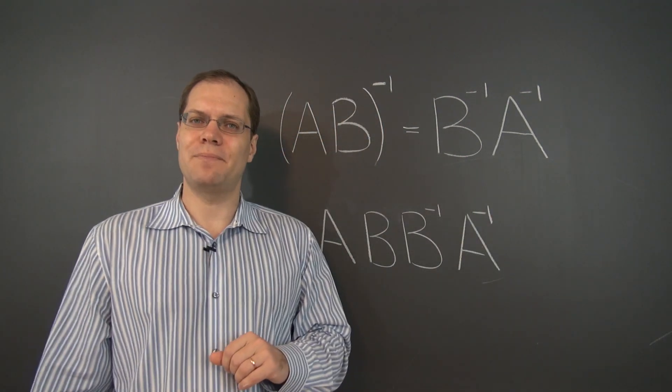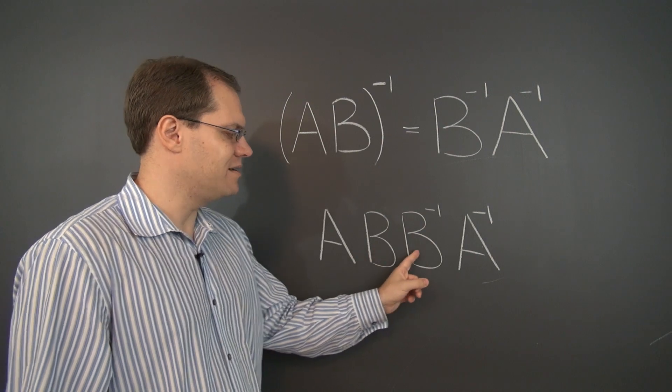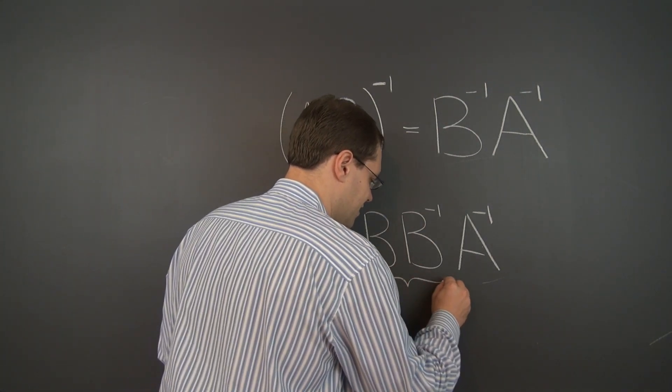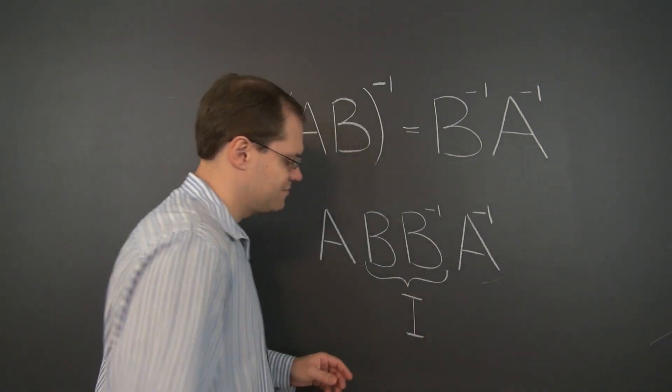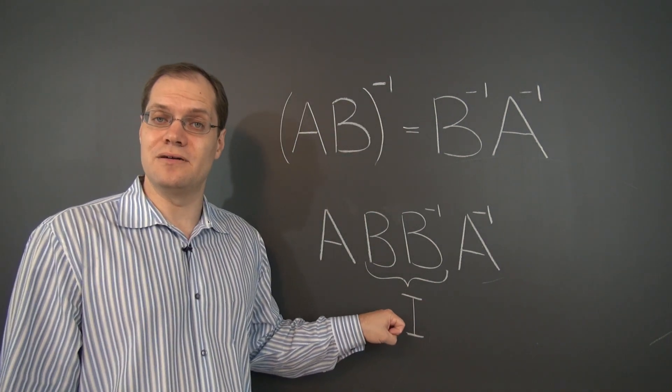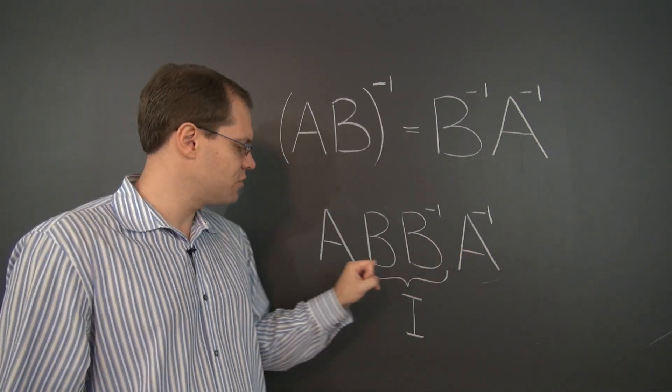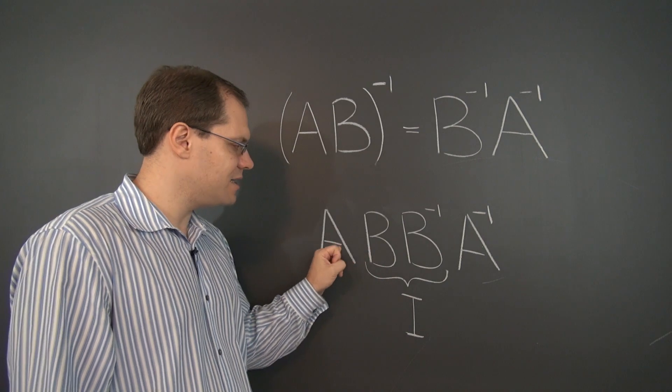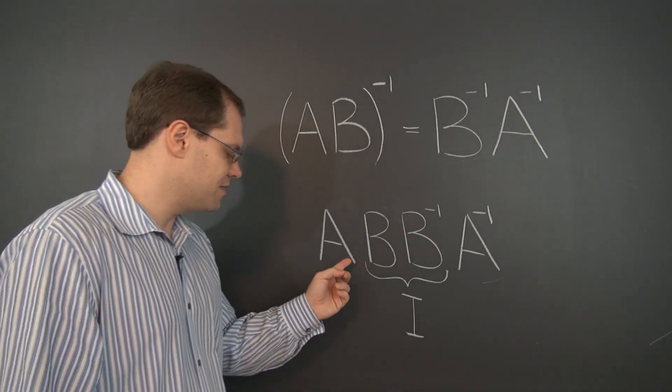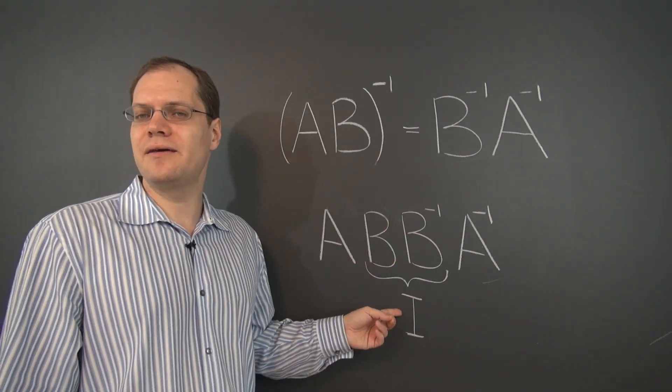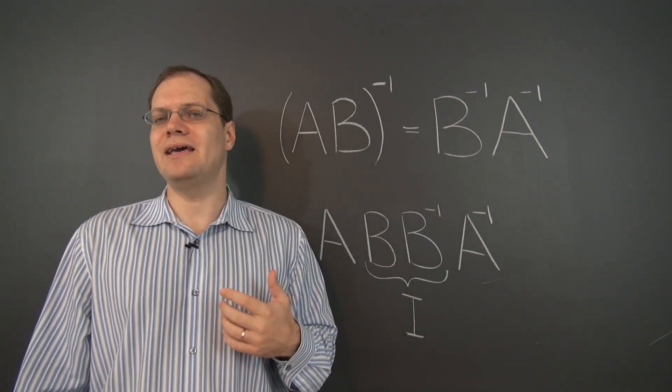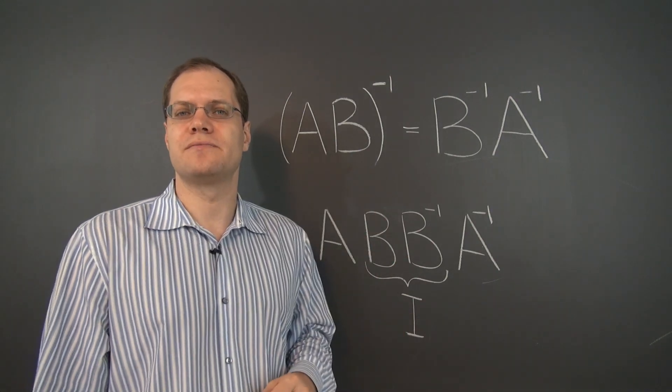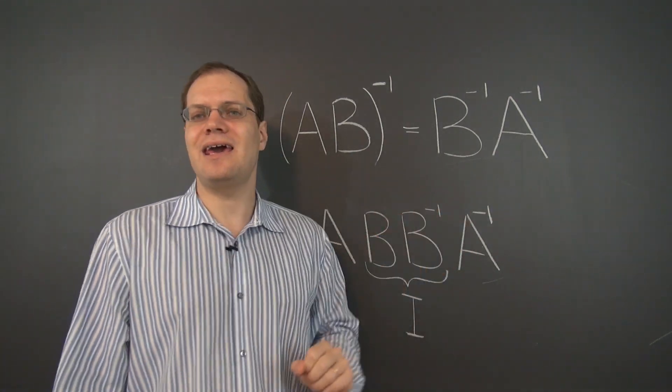And do you see what's happening? Of course you do. There's B next to B inverse. And what's that? That's identity. And when you have identity in the middle, it gets absorbed either into A inverse or into A. The identity, when it multiplies any matrix, it leaves that matrix unchanged. So you can either say AI equals A or I A inverse equals A inverse. In either case, this identity simply drops out.